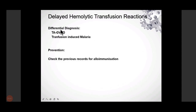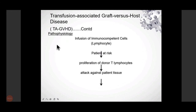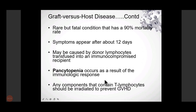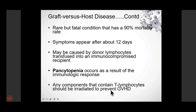Delayed transfusion reactions include graft-versus-host disease (GvHD) and transfusion-transmitted malaria. Risk factors: immunocompromised patients, newborns, geriatric patients, bone marrow transplant recipients, chemotherapy, and radiation. Pathophysiology: inclusion of immunocompetent donor T lymphocytes that proliferate and attack patient tissues. Onset is 3 to 30 days after transfusion. Features: pancytopenia, fever, elevated liver enzymes, watery diarrhea, and erythroderma. It is rare but fatal with a 90% mortality rate. Any blood components containing T lymphocytes should be irradiated before administration.